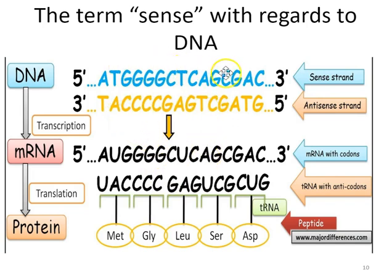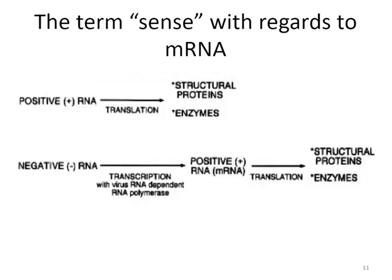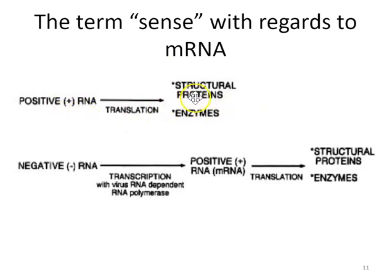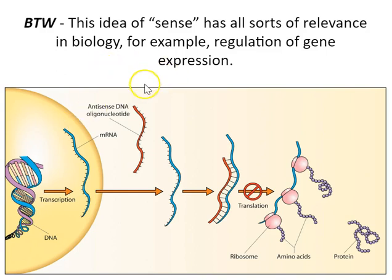In the messenger RNA world, positive-sense RNA can be directly translated by ribosomes to make protein. Negative-sense RNA has to be copied or transcribed into the positive strand before it can be translated. Coronaviruses fall into the positive-sense category, so their genome can be directly translated to get protein. This sense idea has all sorts of relevance — it is also important in understanding gene regulation in eukaryotes, where regulatory RNA relies on complementary or opposite-sense RNA to block or facilitate translation.